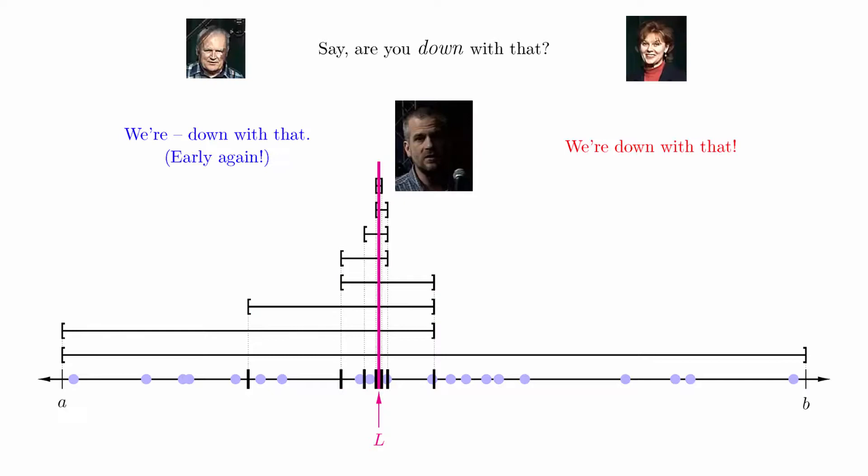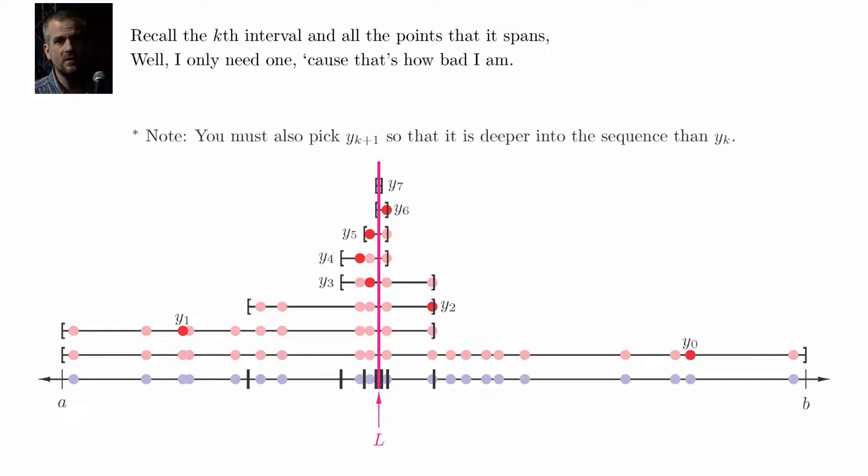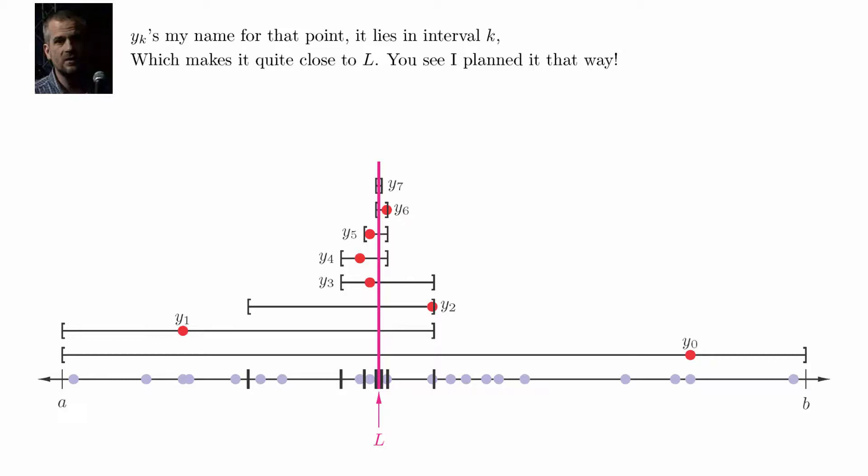Well, are you down with that? We're down with that. Say, are you down with that? We're down with that. Oh, I promised a subsequence, and I never tell a lie. To distinguish this from X, I call my sequence Y. Recall the kth interval, and all the points that it spans? Well, I only need one, cause that's how bad I am. Y_k's my name for that point. It lies in interval k, which makes it quite close to L. You see, I planned it that way.